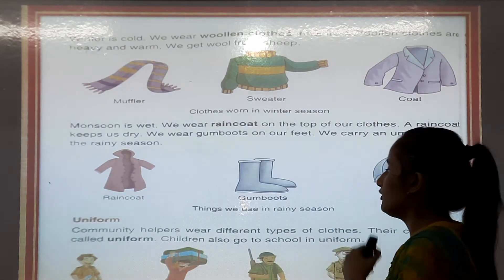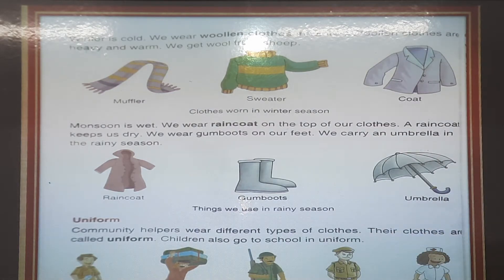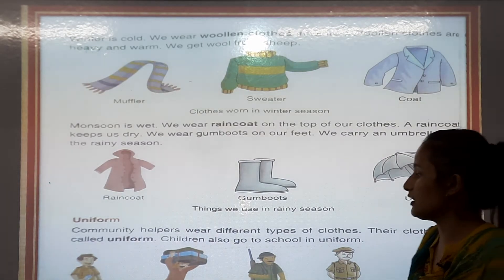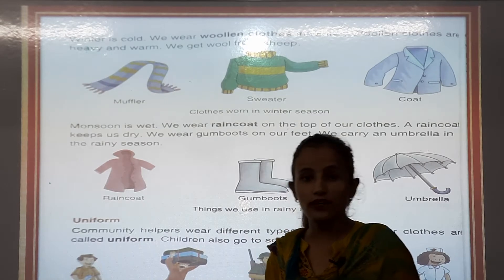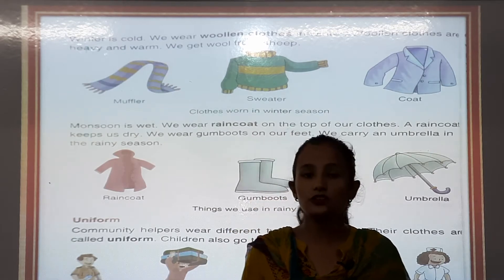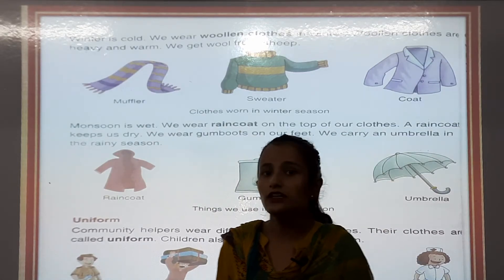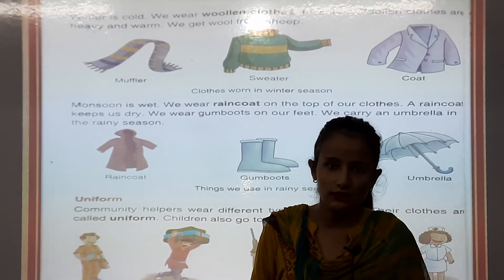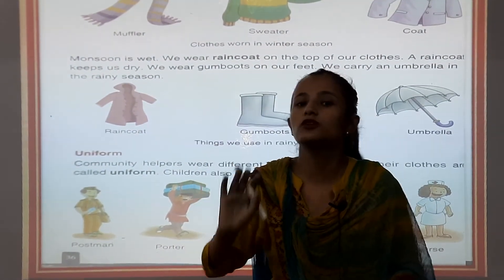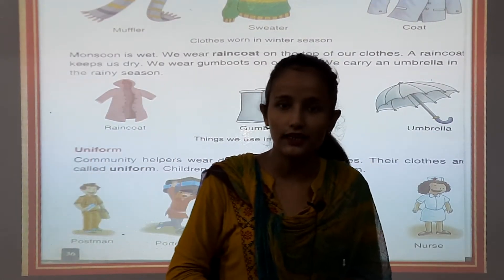Uniform — community helpers wear different types of clothes, and their clothes are called uniform. Children also go to school in uniform. Uniform means postman, policeman wear uniform and in school we wear school dress, which is called uniform. आप पुलिस अंकल को उनके dress से पहचानेंगे। With the help of uniform, you can say that this is a policeman.